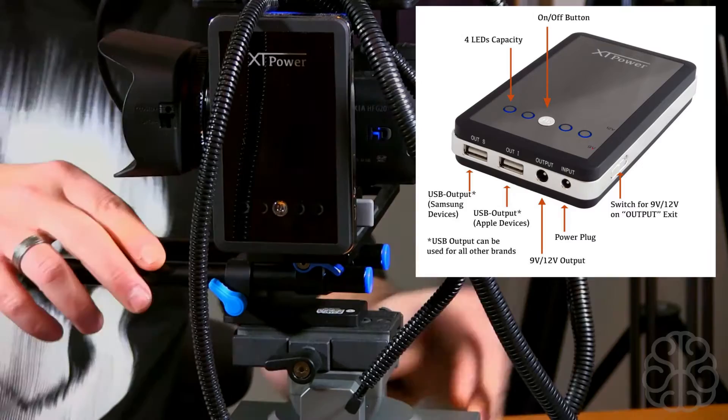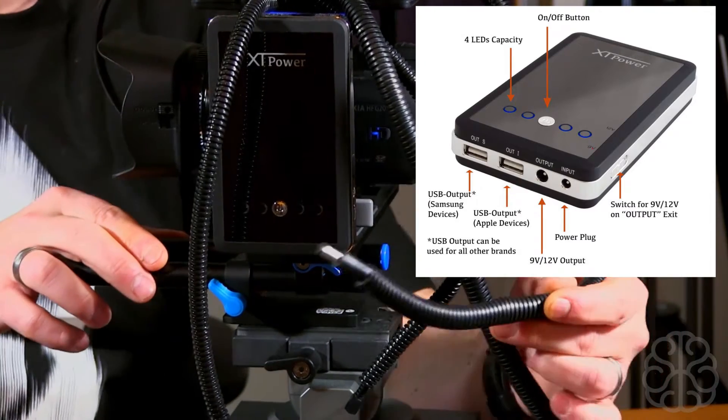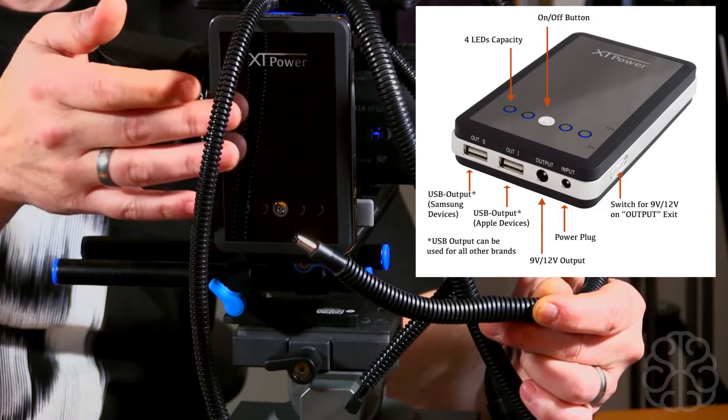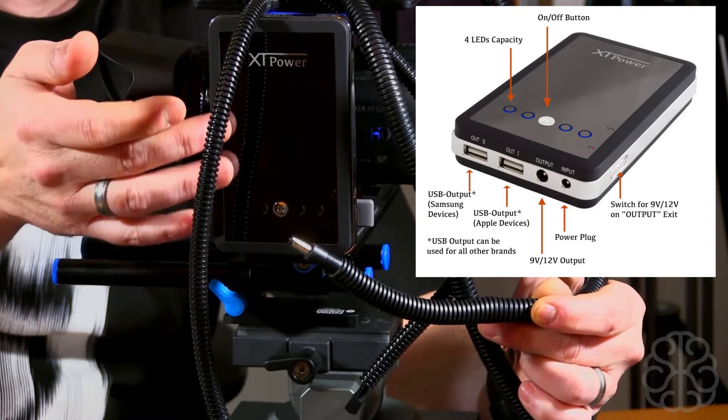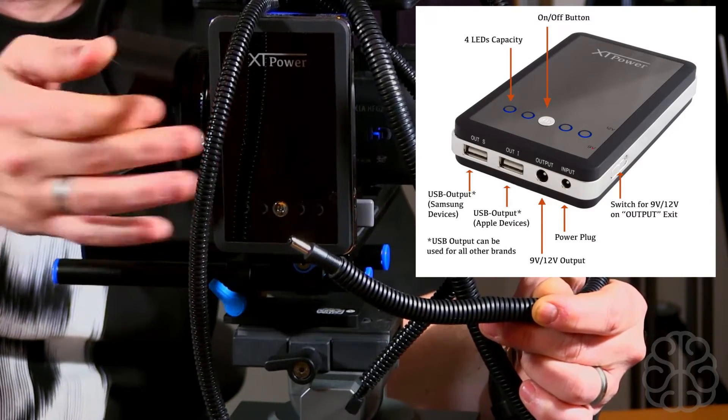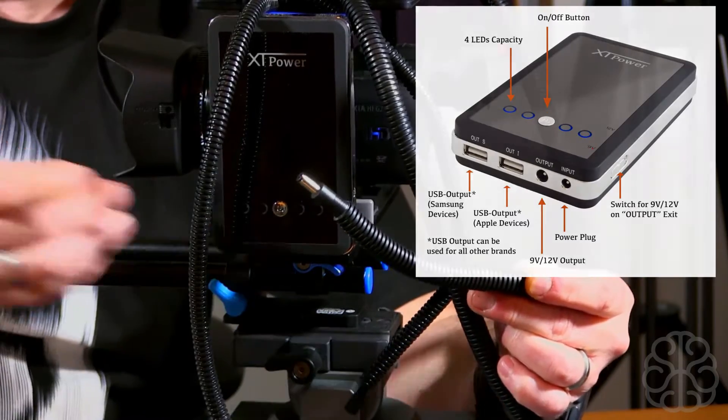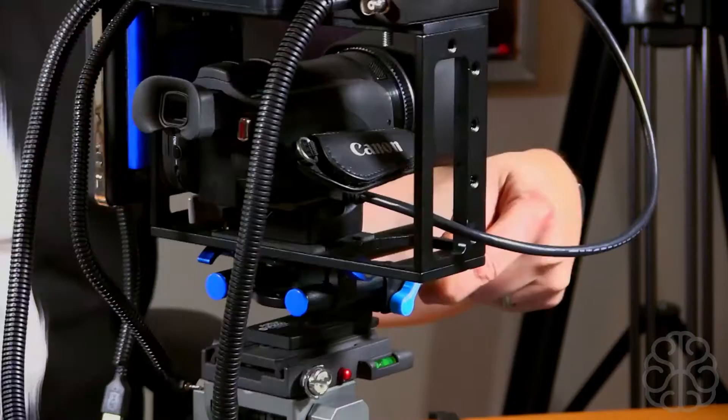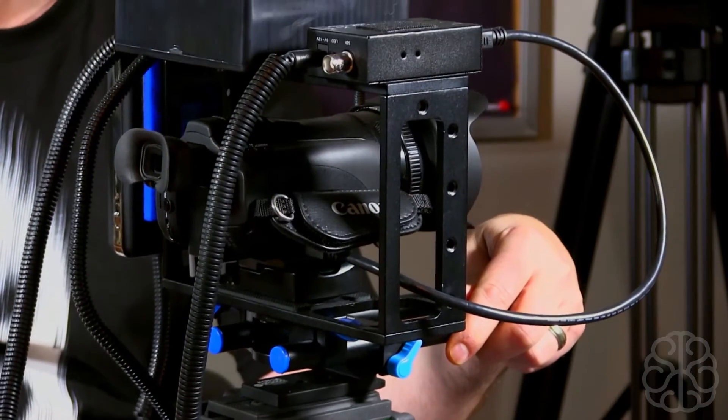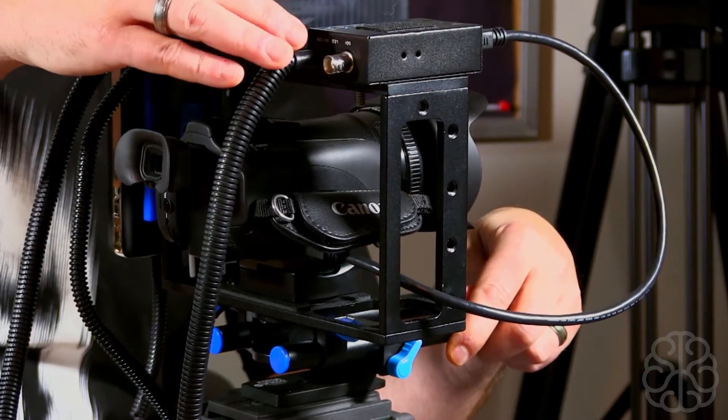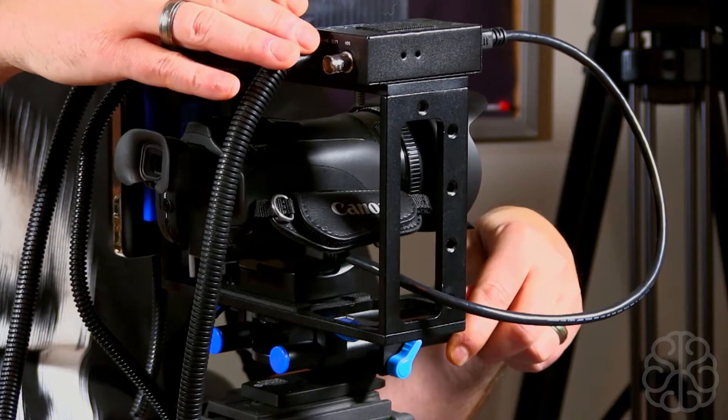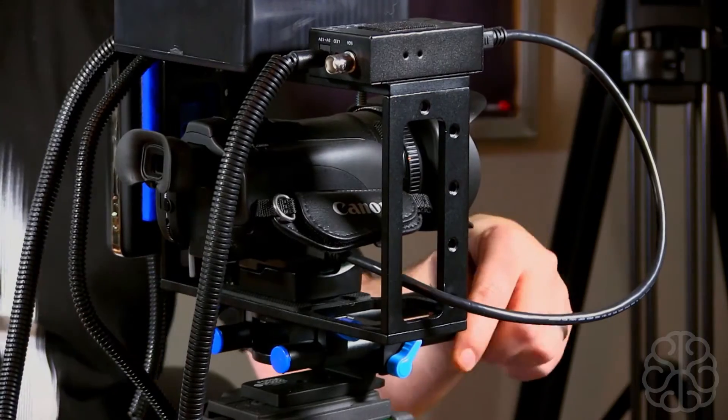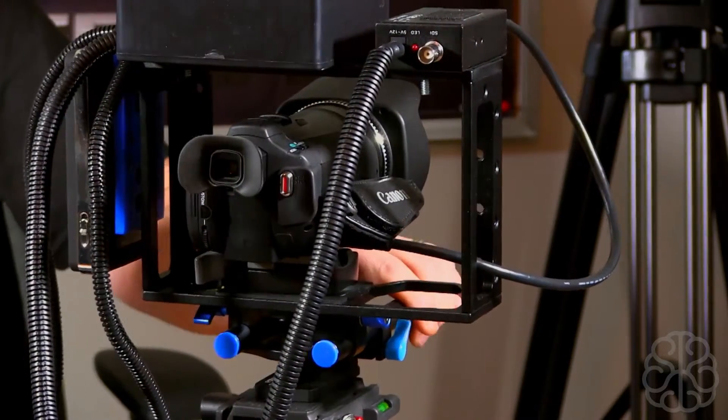The 9 volt that we're using powers this little box here, the little converter. The power connection goes from this to the battery and supplies it with 9 volts. We could also power the camera with this. The only thing I've noticed, these cameras, the adapter that comes with it, the AC adapter, is rated at 8.4 volts.